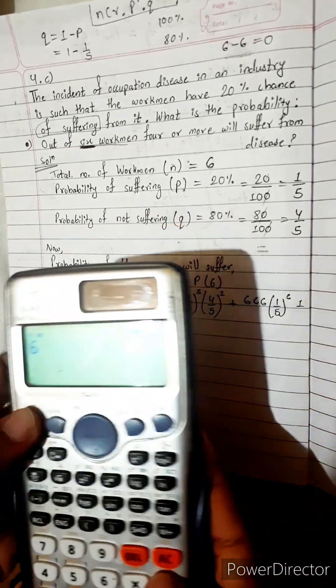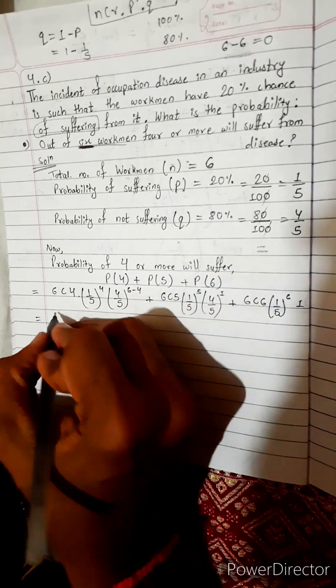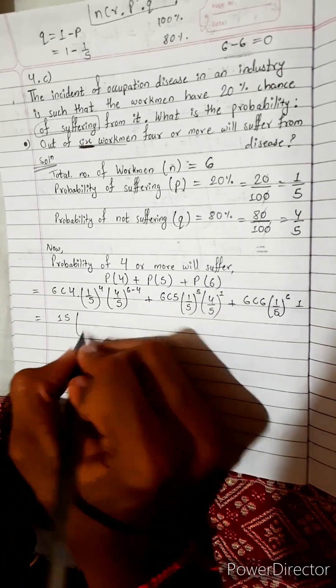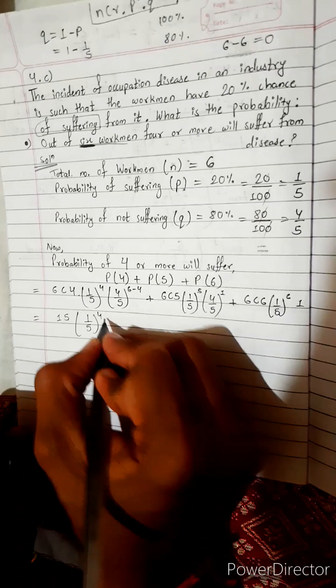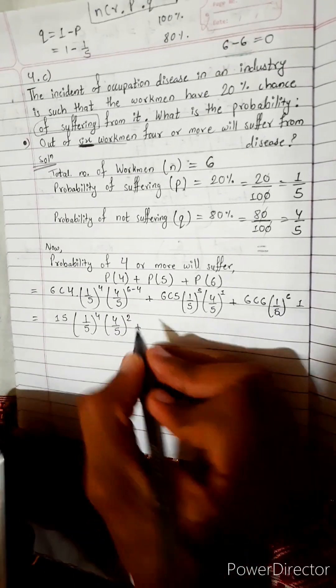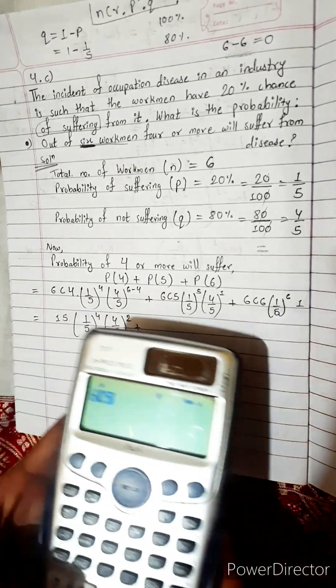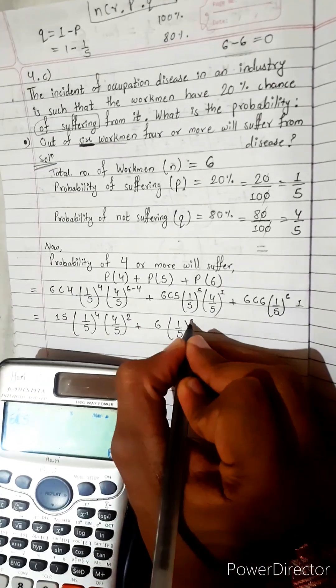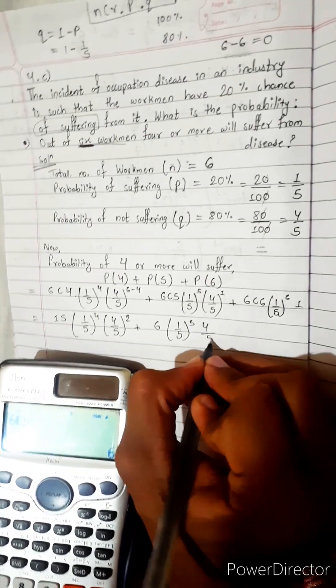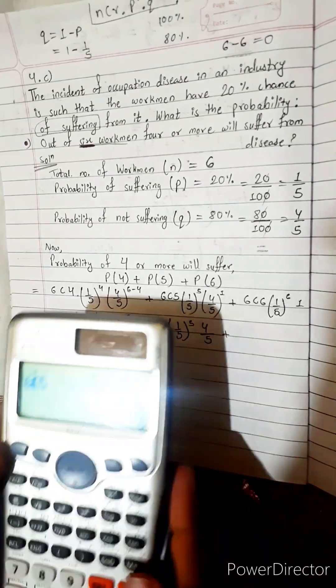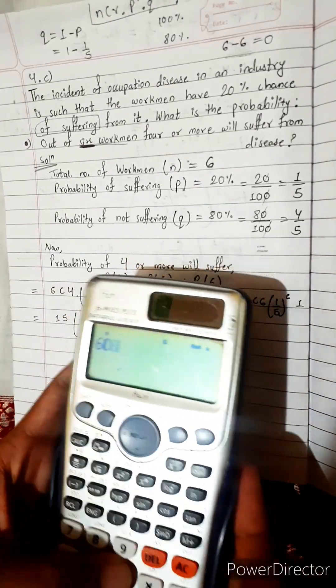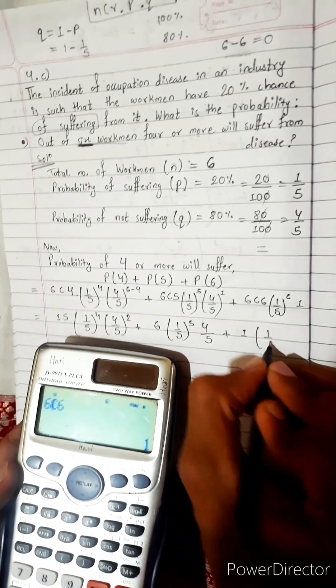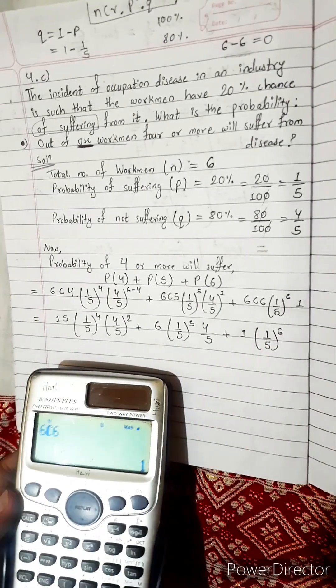Now 6C4, this is 15. 15, 1 by 5 power 4, 4 by 5 power 2, plus this is 6. 6, 1 by 5 power 5 and multiply with 4 by 5, plus this is 1. 1 into 1 by 5 power 6. Now directly calculator.